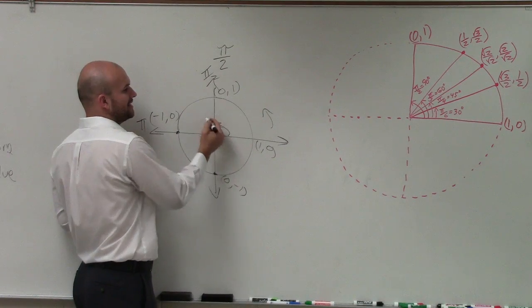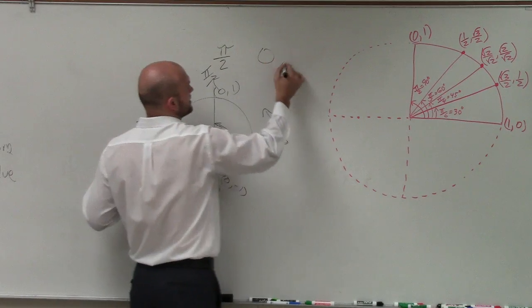But that angle here, from here to here, is going to be pi halves. So therefore, the coordinate point is 0, 1.